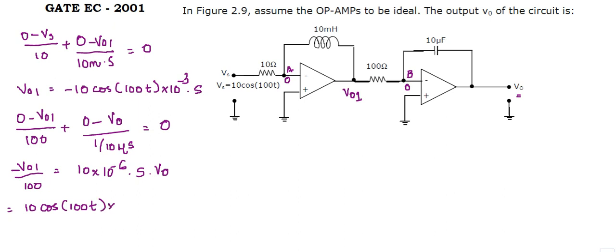So 100 is equal to 10 into 10 to the power minus 6 into S into V0.